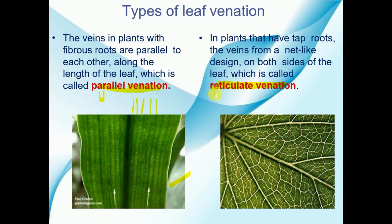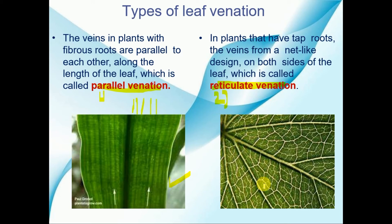Now we will move towards the second type, that is your reticulate venation. Reticulate venation means when the design formed by the veins is in the form of a net-like structure. You can observe these net-like designs over the structure of the leaf, and this net-like design is known as reticulate venation.